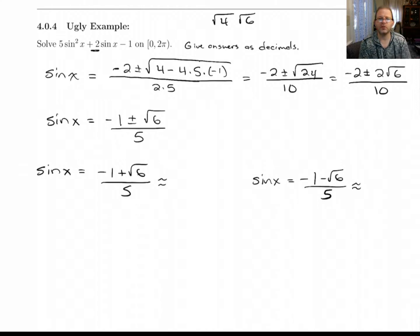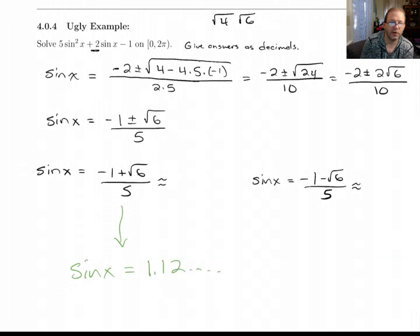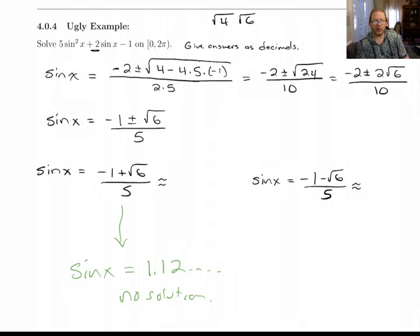How many solutions do we get to the original equation? It depends. If a value came out to something like 1.12, that would give no solution because sine is always between negative 1 and 1. So I'm going to use my calculator to get decimal approximations and make sure both values are between negative 1 and 1.